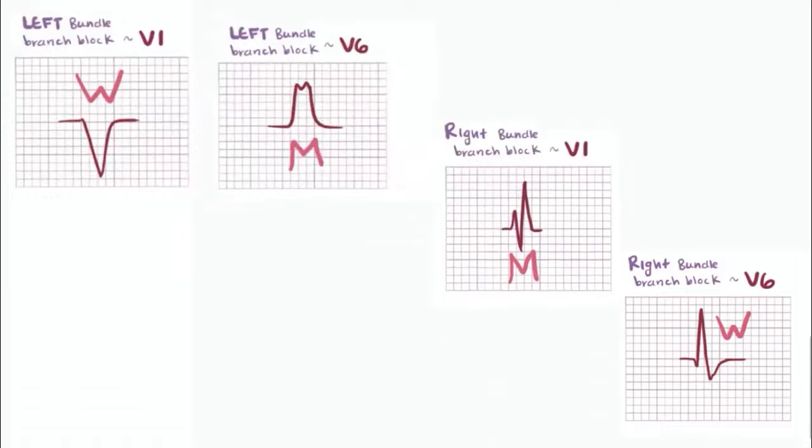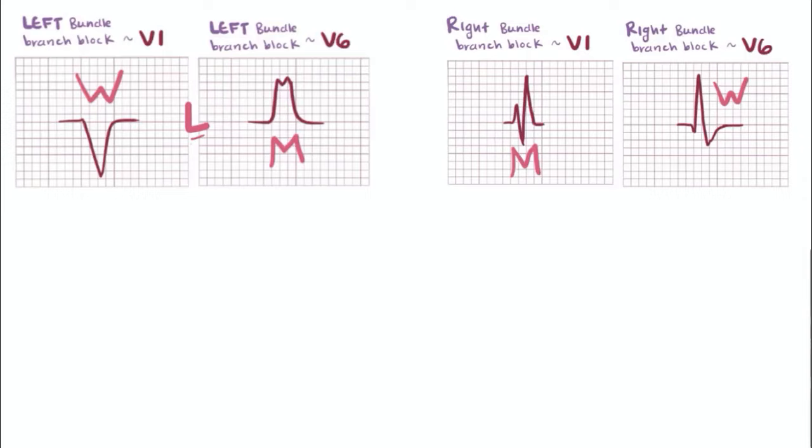Now, if we look at all of these, you've got a W shape in V1 and an M shape in V6 for left bundle branch block, but then an M shape in V1 and a W shape in V6 in right bundle branch block, which sets us up for this awesome mnemonic, William Morrow.